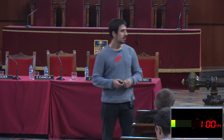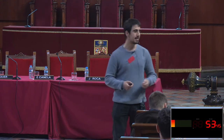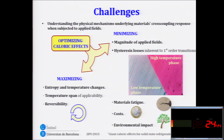On the other hand, we should minimize the magnitude of the applied fields so that they are not dangerous for the application and not difficult to apply. We should also reduce the hysteresis losses inherent to these first-order transitions, so there is no heat loss during the thermodynamic cycle — which relates to the compatibility between the high-temperature and low-temperature phases. And we should avoid material fatigue so the materials don't break when cycling, while also considering cost and environmental impact of these new materials.